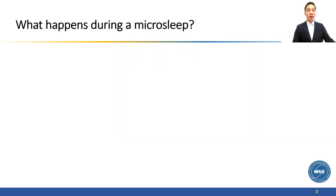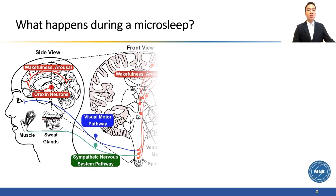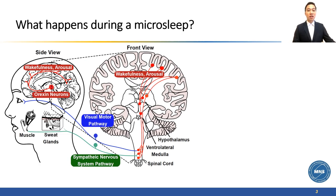What actually happened during a microsleep? To answer it, we need to look into our nervous system. The orexin neuron in our midbrain area is the center of our wakefulness. It has a link throughout the brain, the visual motor pathway, and the sympathetic nervous system. When sleep pressure builds up, the inhibition of orexin neuron leads to a series of action.